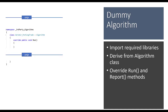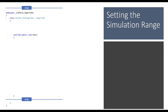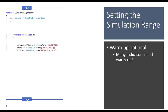We'll spend most of our time inside the run method. The first thing is setting the simulation range. TuringTrader has fields for start time, end time — these are just the date range for which we have SPX data — and optionally a warm-up start time. Indicators like moving averages need some time to warm up with data until they create valid results, so you can specify that.